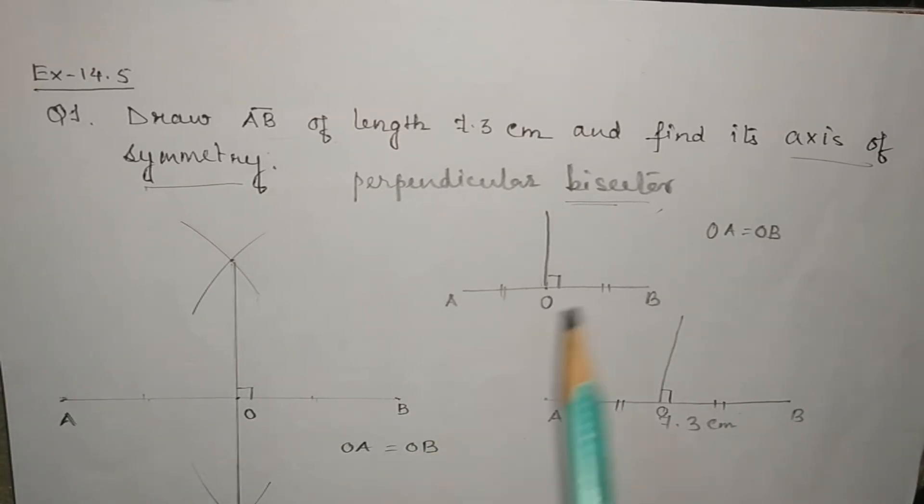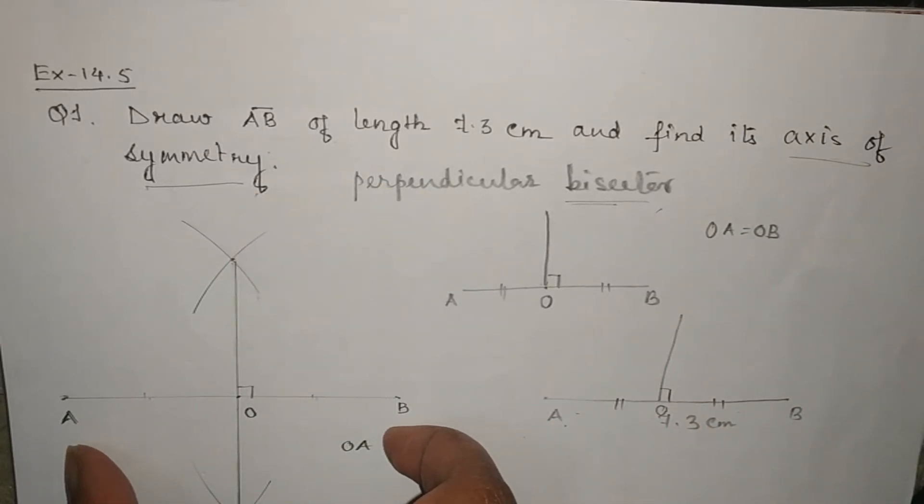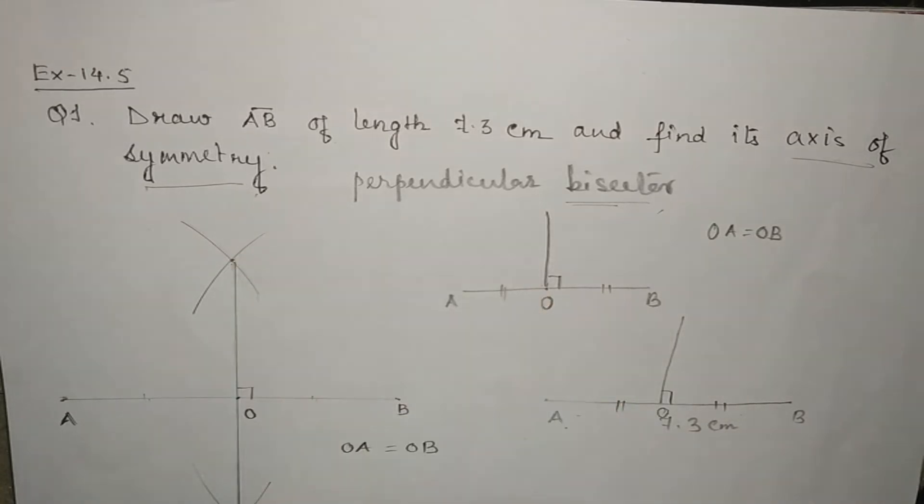So this is called axis of symmetry. So here I have drawn a line segment AB and after that I have drawn a perpendicular bisector which means the axis of symmetry. So this was question number 1.